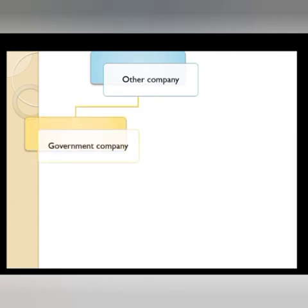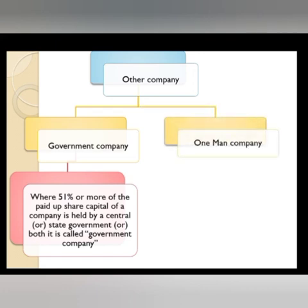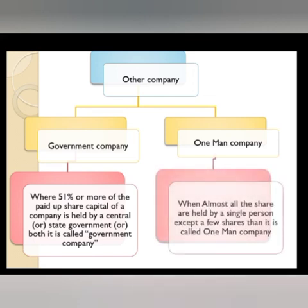Other Companies: Government Company: When 51% or more of the paid-up share capital of a company is held by a central or state government or both, it is called a government company. One Man Company: When almost all shares are held by a single person, except a few shares, that is called a one man company.